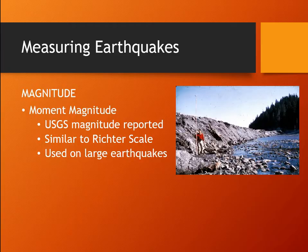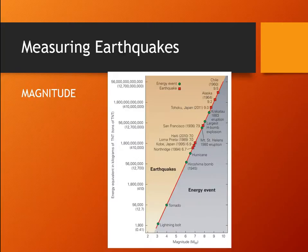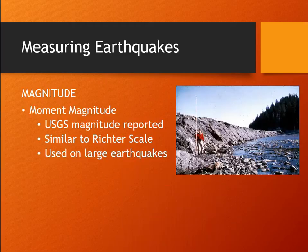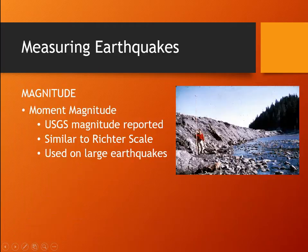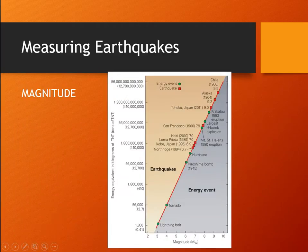If there are aftershocks, those have their own magnitudes and give off their own amount of energy. Magnitude is a log-based scale — every time you go up one order of magnitude, the amplitude of the wave goes up by 10 times. However, every order of magnitude you go up, the energy release actually goes up by 32 times.